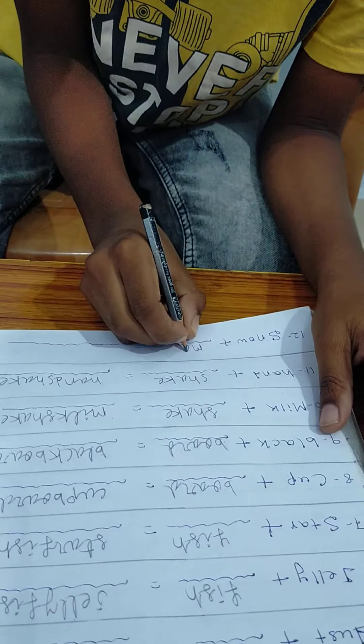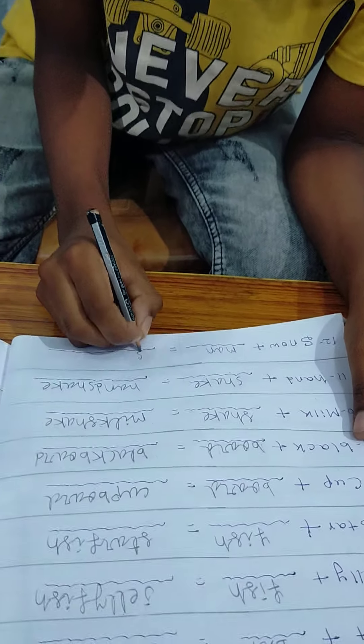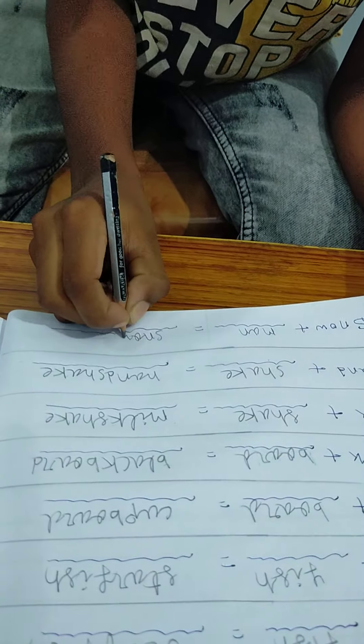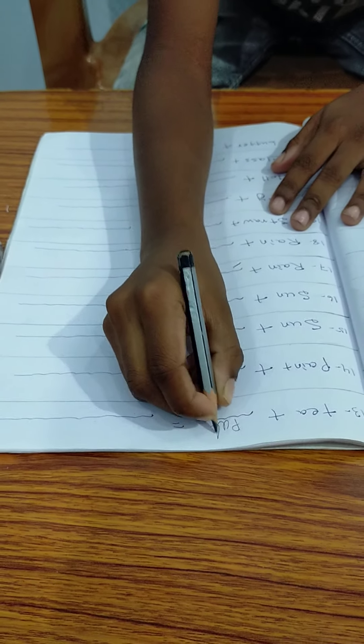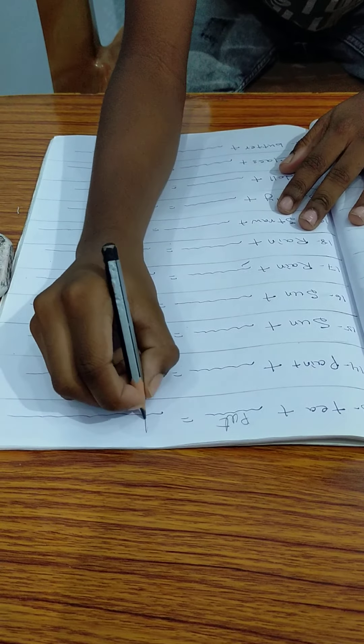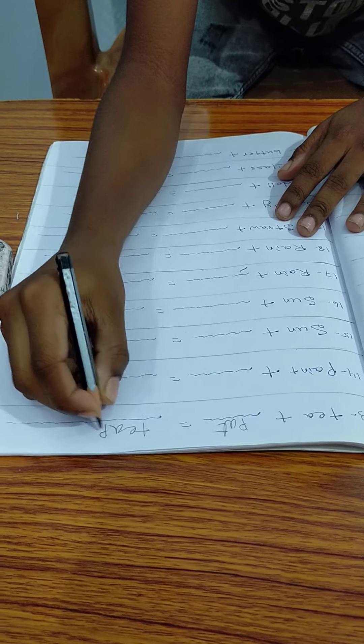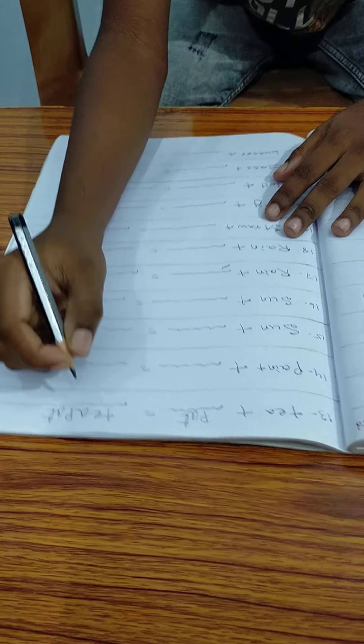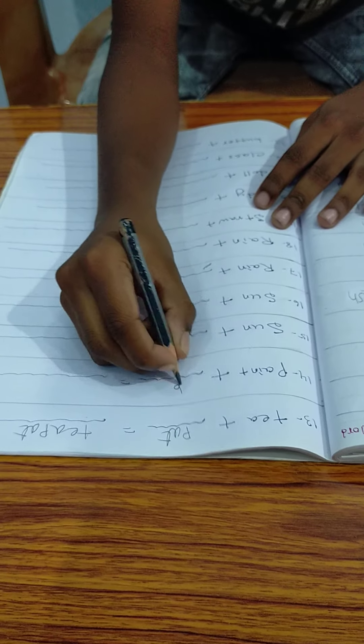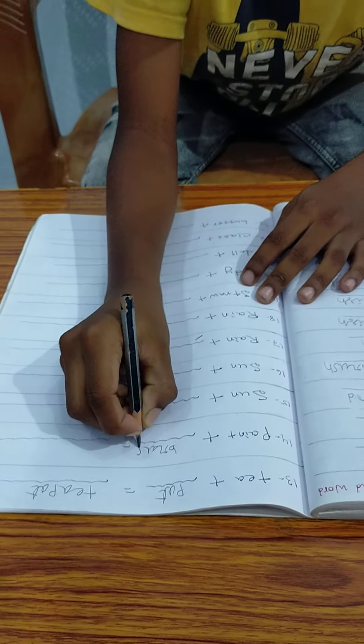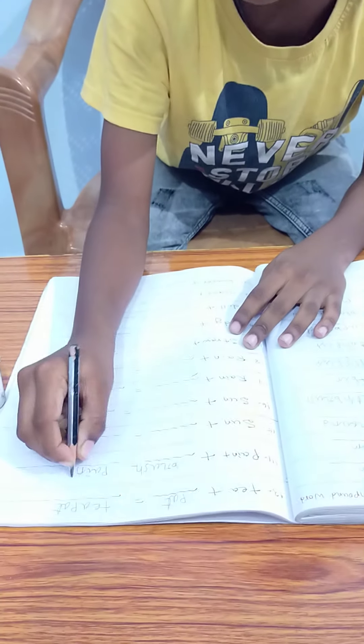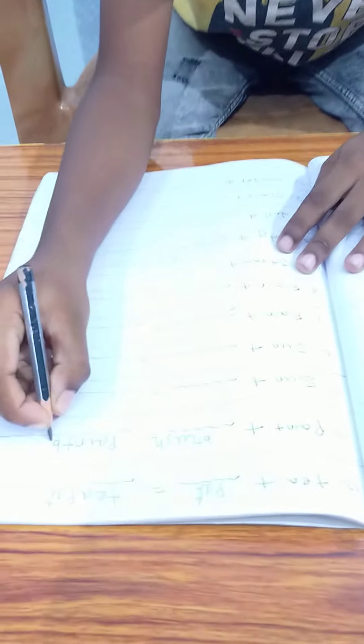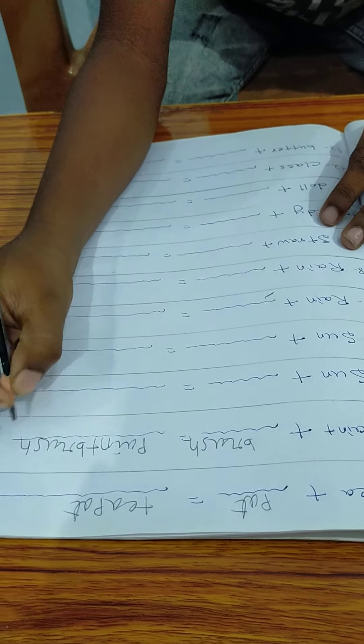Snowman. S-N-O-W, snow. M-A-N, man. Snowman. Teapot. P-O-T, pot. T-E-A, tea. P-O-T, pot. Teapot. Paintbrush. B-R-U-S-H, brush. P-A-I-N-T, paint. Paintbrush.